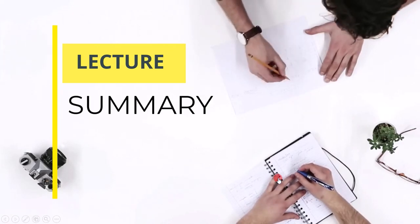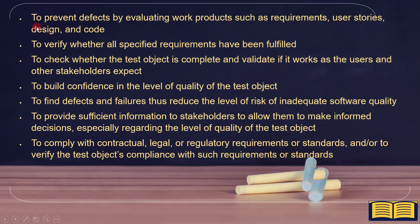Let's summarize all the points. The seven objectives of testing are: to prevent defects by evaluating work products such as requirements, user stories, design, and code; to verify whether all specified requirements have been fulfilled; to check whether the test object is complete and validate if it works as users and other stakeholders expect; to build confidence in the level of quality of the test object; to find defects and failures, thus reducing the level of risk of inadequate software quality; to provide sufficient information to stakeholders to allow informed decisions; and to comply with contractual, legal, or regulatory requirements or standards.